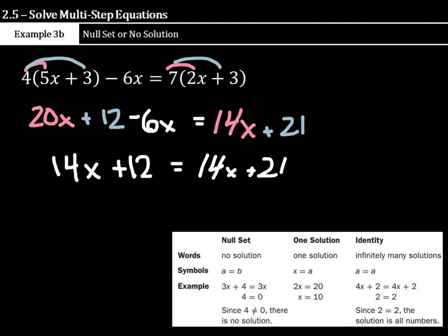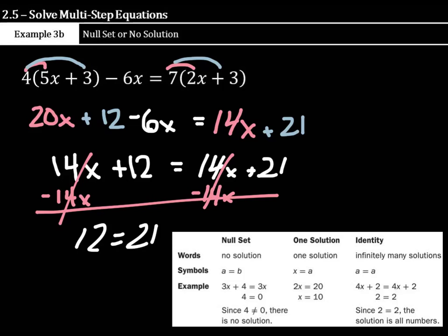And that is a 14x plus 12 equals 14x plus 21. Now, hopefully you can see where this is going. If we subtract 14x from both sides, those once again cancel, and you're left with 12 equals 21. Well, 12 does not equal 21, so there's once again no solution. So when you get 12 equals 12, that's infinitely number solutions are all real numbers, but when you get 12 equaling 21 or a different number, that's when you have no solutions.